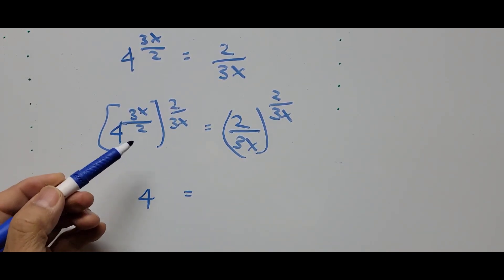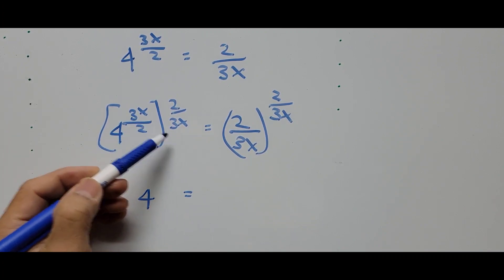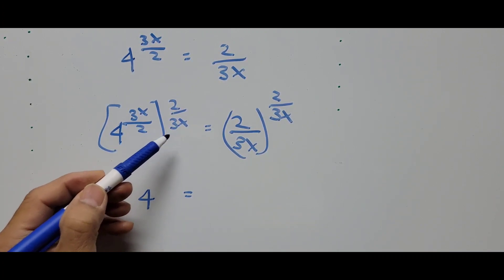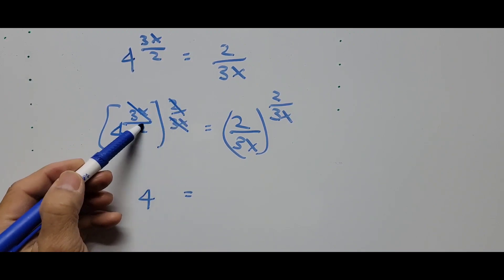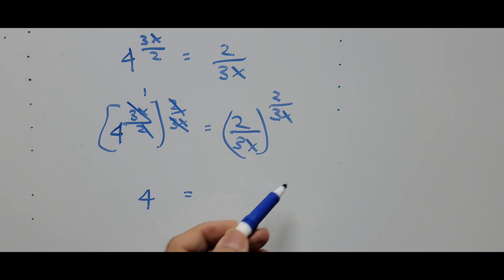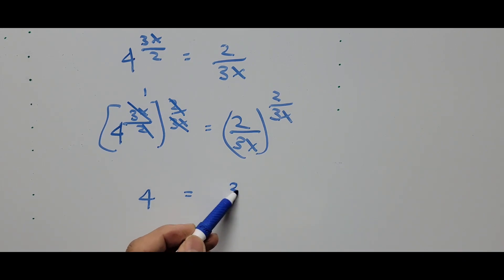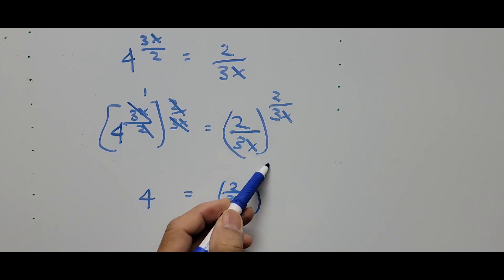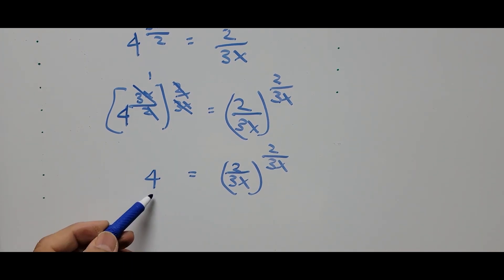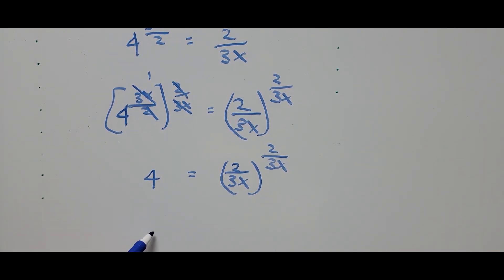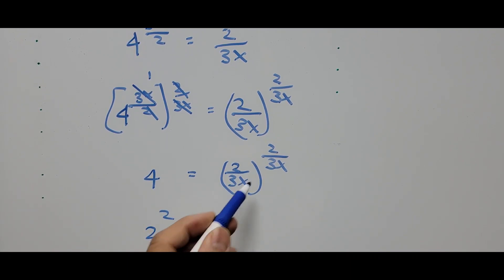The equation now becomes 4 equals the right side, since the exponent gets canceled — 3x divided by 3x and 2 divided by 2 both come out to 1. The right side becomes 2 divided by 3x, to the power of 2 divided by 3x. From here, 4 can be expressed as 2 squared, and the right side remains 2 divided by 3x to the power of 2 divided by 3x.